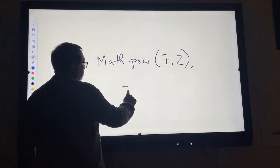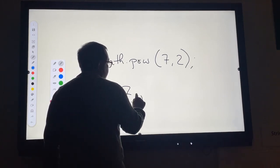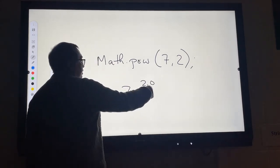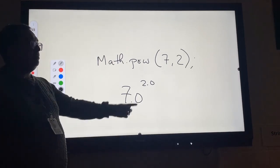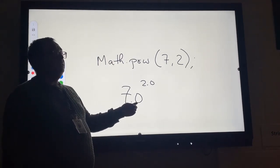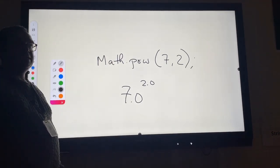So this would go 7.0 to the 2.0. This would be the conversion that it makes from integer to decimal and then it calculates that and returns it as a decimal number.